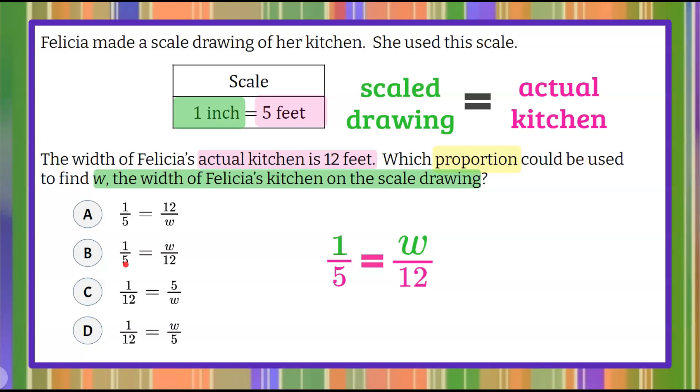So we already identified it was going to be A or B, and then we can see that it is answer choice B. The reason this is, is 12 is not part of the scaled drawing. 12 is the actual kitchen.